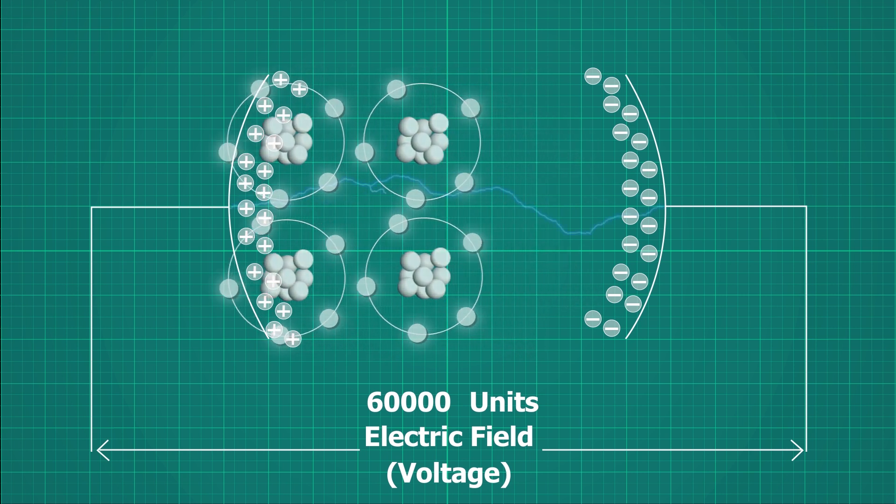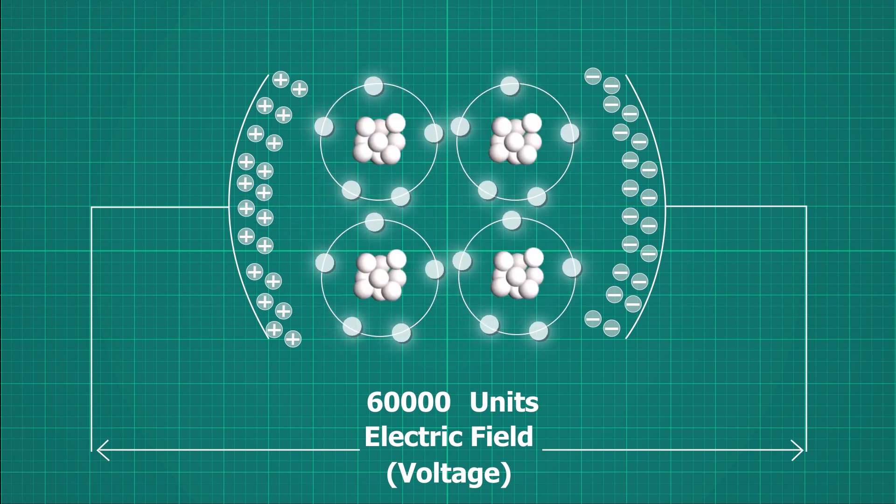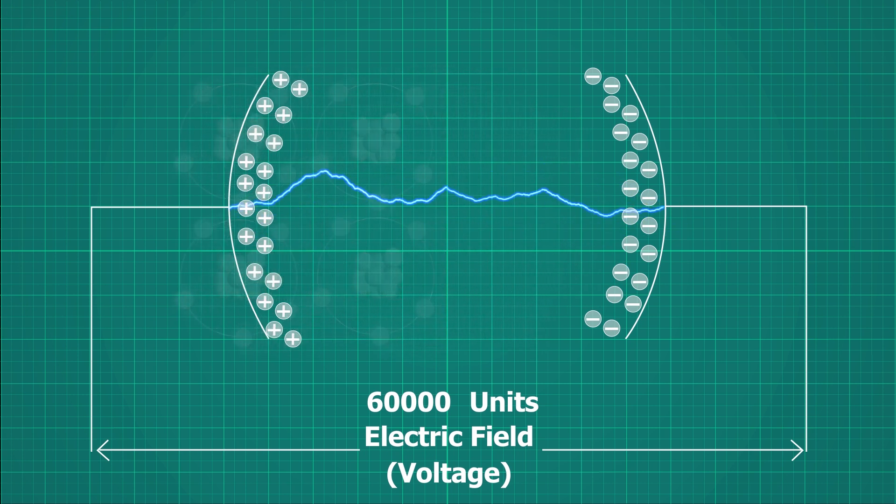These ions are accelerated again and collide with another atoms and generate more ions. This avalanche-like effect generates an intense amount of heat, and ions attracted towards electric field causes current to flow or produce arc in gas.